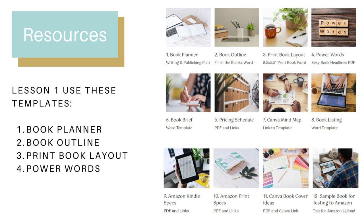The book planner is literally a place that you will download and brainstorm your ideas. The book outline is the skeleton of your book. When you finish the skeleton, you start filling in all the gaps and transfer it over to the print book layout. The print book layout is the document that has been formatted for Amazon requirements to print a book in paperback. It's really good when you see it in that layout because very quickly you start to imagine how your book is going to look finished.